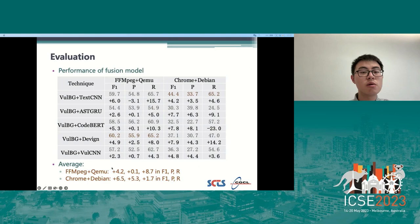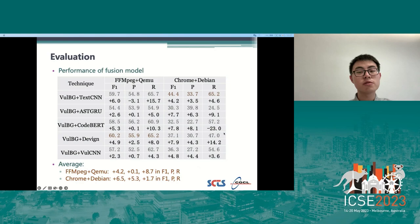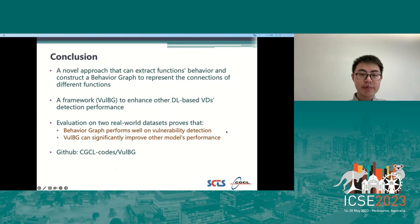In the fusion model results, all models improve, with average improvements listed across different metrics. There is a precision drop in the fusion with TextCNN because TextCNN already has the highest precision, and fusion may average it down. There is also a recall drop in the fusion of CodeBERT, but CodeBERT classifies almost all samples as vulnerable on the imbalanced dataset, making the drop reasonable. In conclusion, we propose a novel approach that extracts function behaviors, constructs a behavior graph to represent connections of functions, and implements the OBG framework.